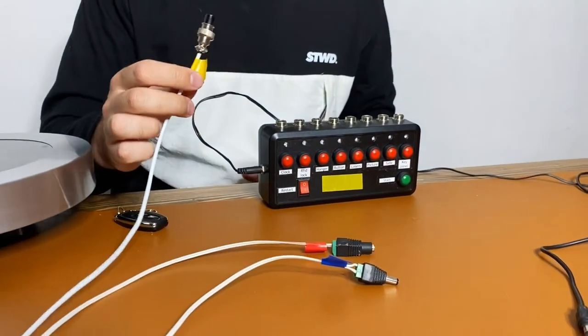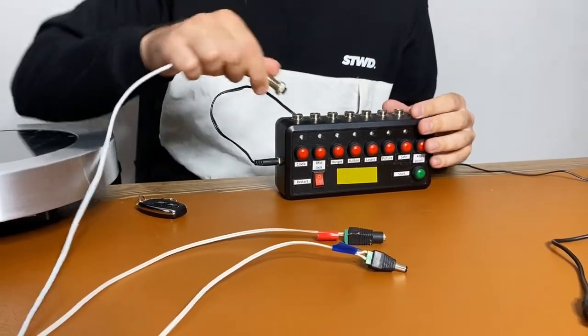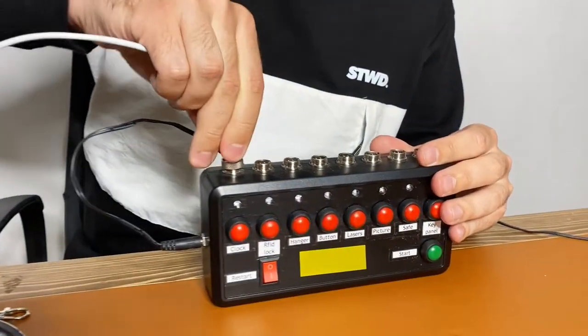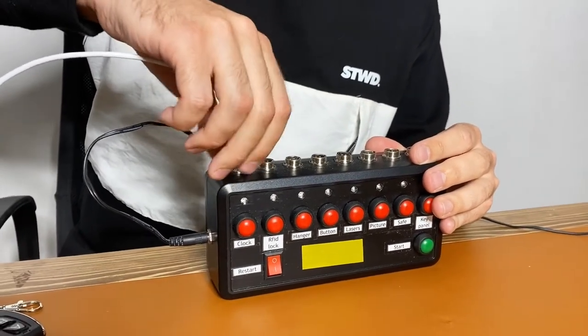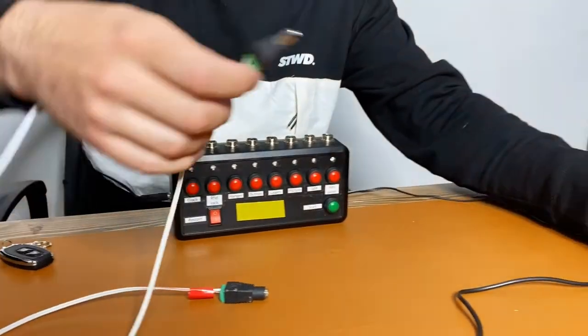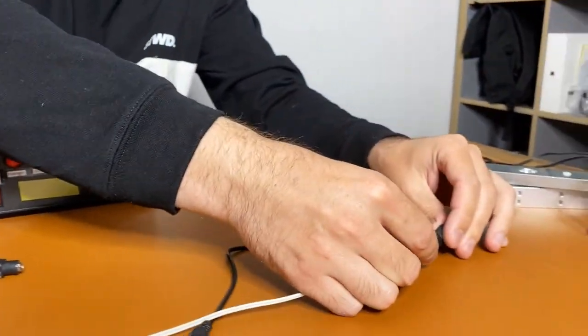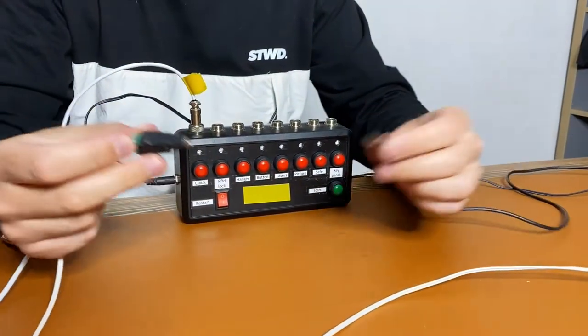The yellow one is a signal wire, it comes to the control box, so now let's connect it to the control box. The blue wire is for magnetic lock, let's connect it to magnetic lock. And the red wire is for the power, let's connect it to the power supply.